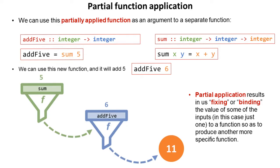We can use this new function and it will add five to whatever we apply it. So partial application results in us fixing or binding the value of some of the inputs, in this case just one of them, to a function so as to produce another more specific function.